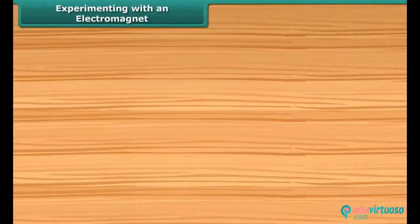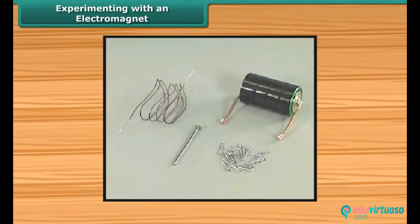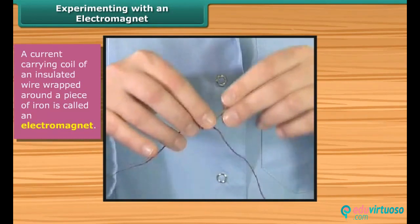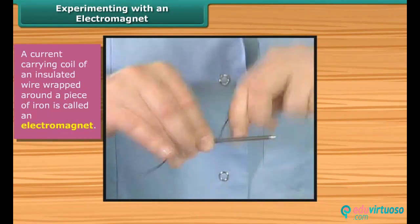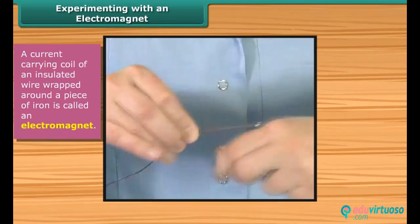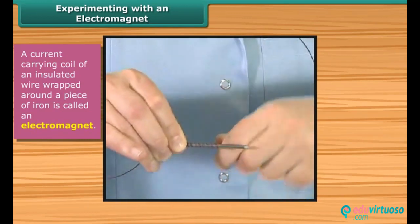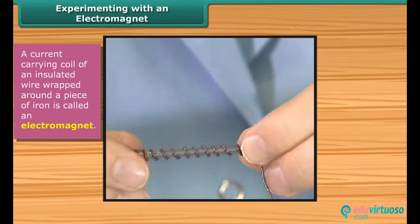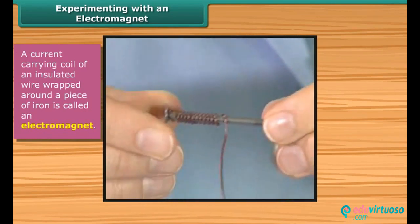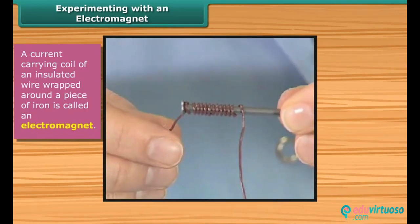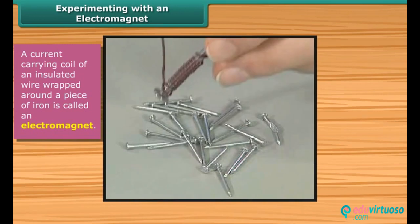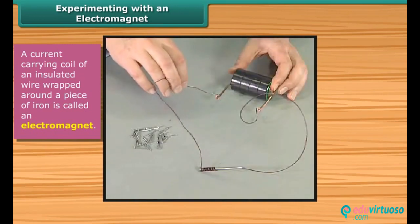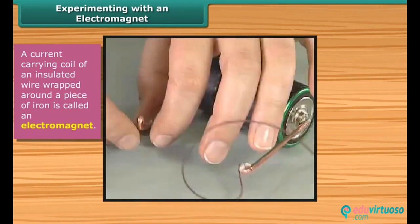Let us perform a simple activity to show the magnetic effect of current. Take a long piece of flexible wire and wrap it around an iron nail. This forms an electromagnet. Connect the free ends of the wire to the terminals of a cell through a switch. Now place some pins near the end of the nail and switch on the current. We see that the pins cling to the tip of the nail. When the current is switched off, the pins are no longer attracted to the nail.